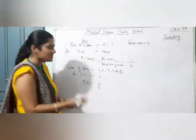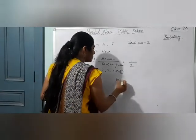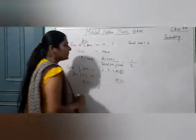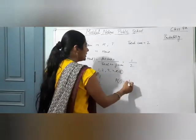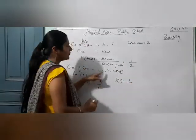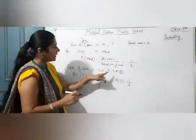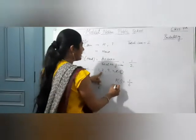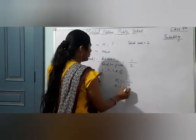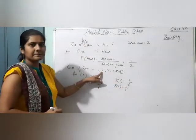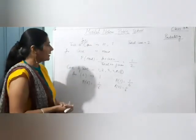अगर मुझे 1 चाहिए, तो 1 आने की probability क्या है? एक ही बार है 1, इन सब में, और total number of cases कितने हैं? 6. Similarly, 2 आने की probability क्या है? वो भी आपकी 1 by 6 रहेगी. I think इतना समझ आ रहा है आपको.